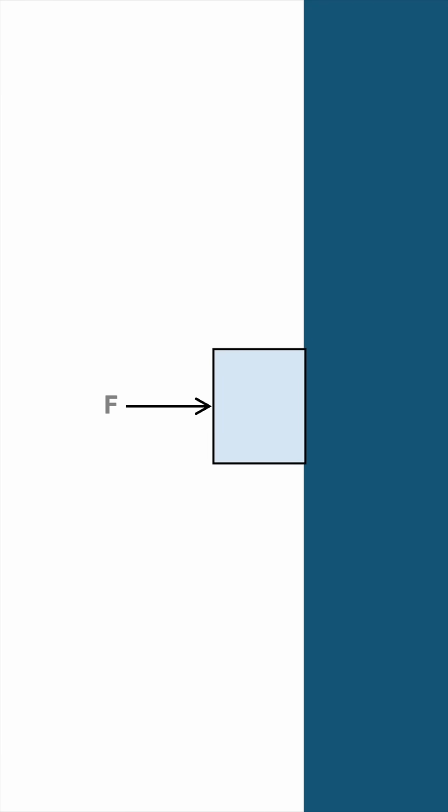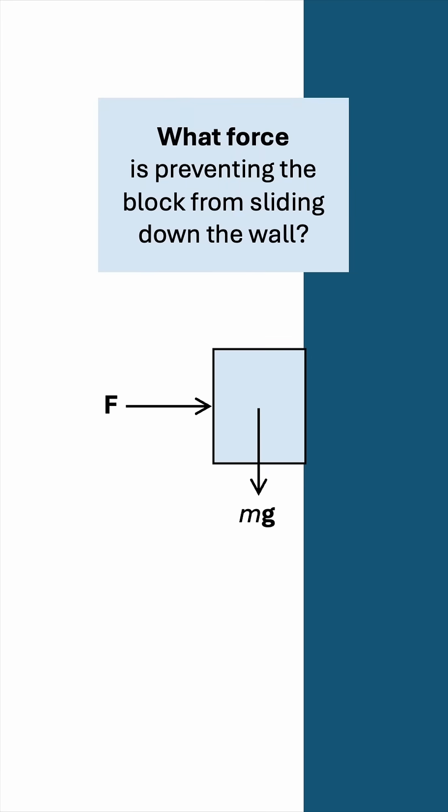Physics question: say there is a block pushed against a wall. What force prevents the object from sliding down the wall? We have weight which points vertically down. So what vertical force opposes the weight and prevents motion?